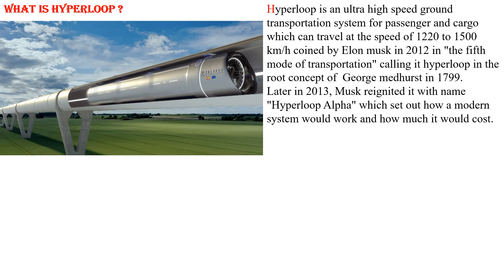The Hyperloop Alpha paper described the working system and its cost structure. It is an ultra high speed ground transportation system for passengers and cargo, capable of speeds of around 1220 kilometers per hour.